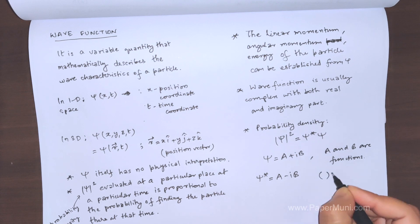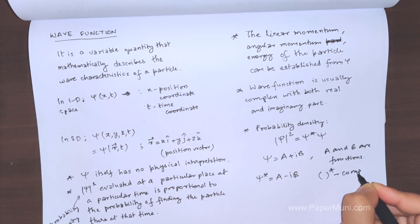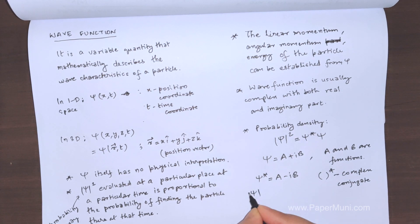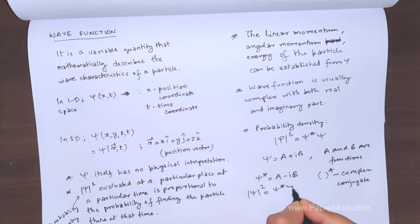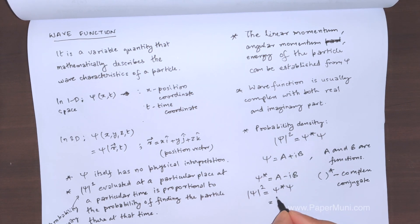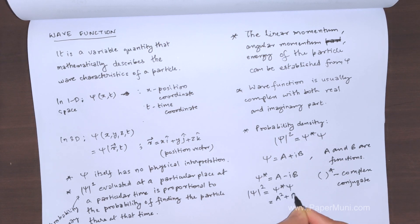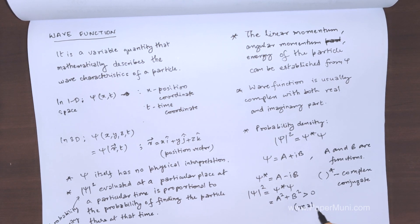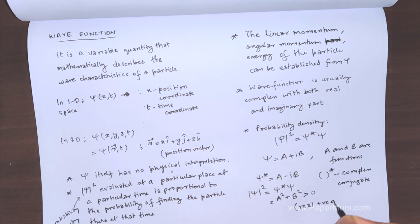So if we write this, we know that the mod square can be, from complex numbers, we know that this can be written as this. And if we do this calculation, if we write down this psi star psi, what do we get? We get a square plus b square. Now this being a real function, if we take the square of it and we add them, it will always be greater than 0. So this comes out to be real as well as positive quantities.